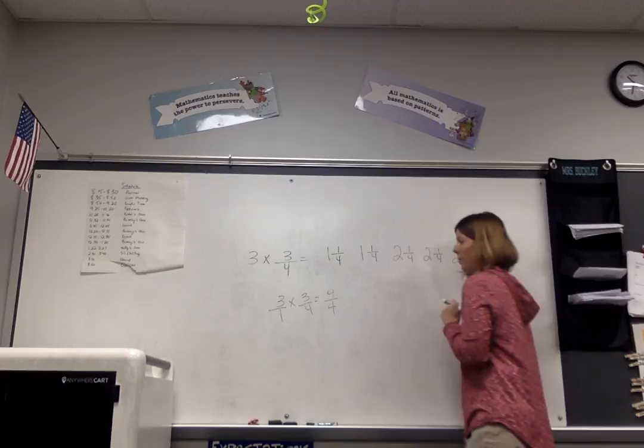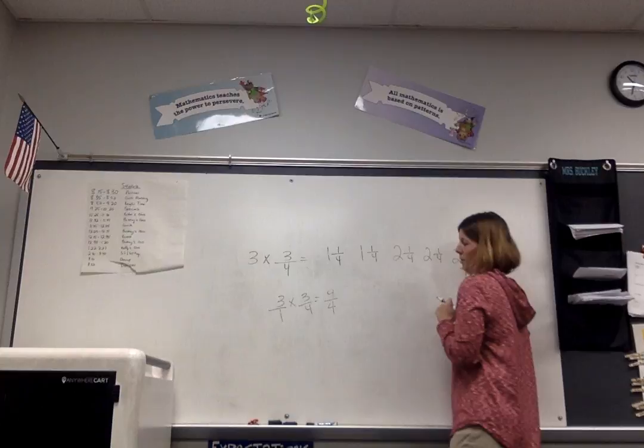And then since it's improper, you have to make it mixed, so you have to divide, nine divided by four.